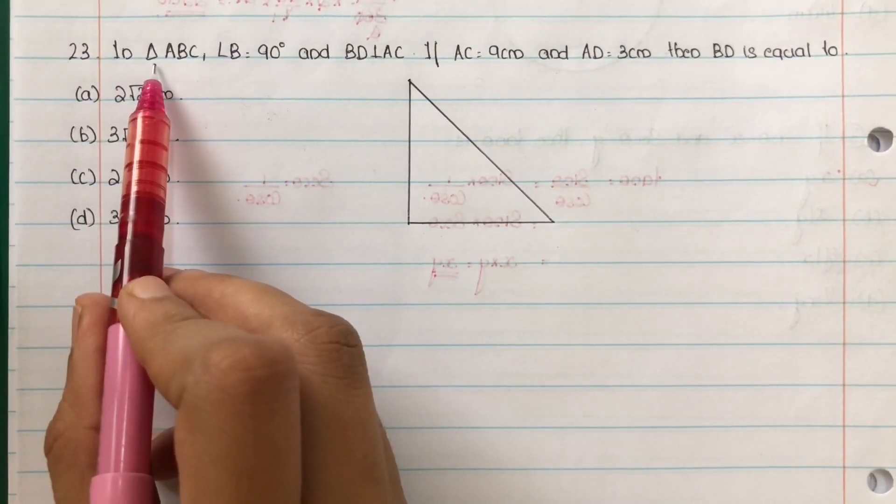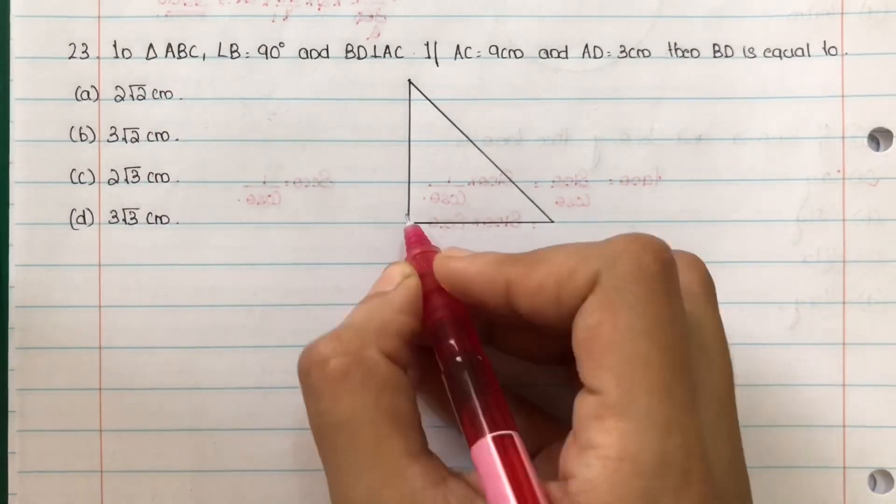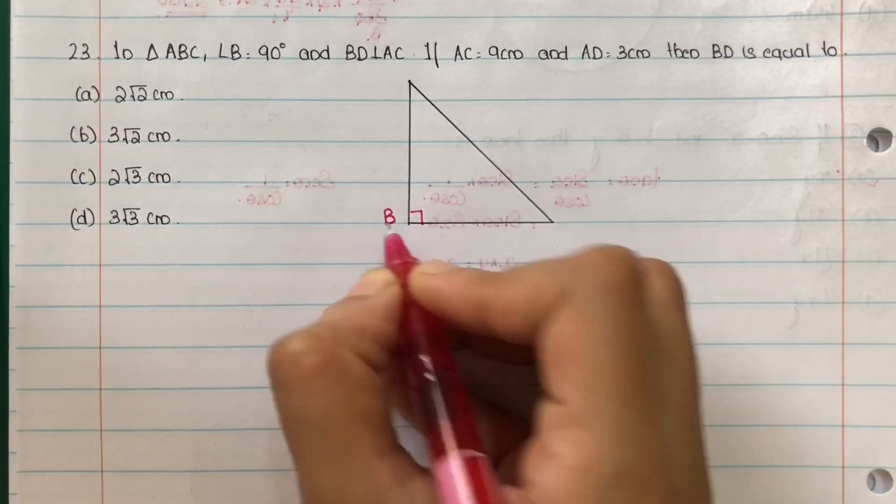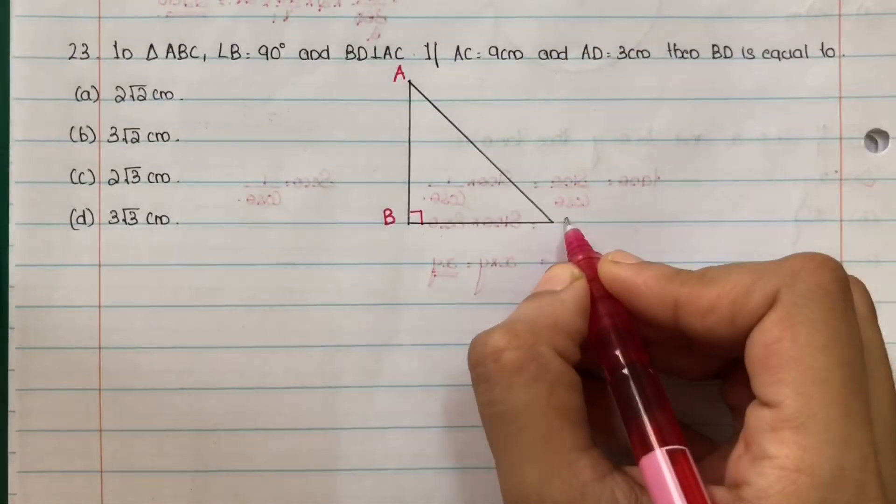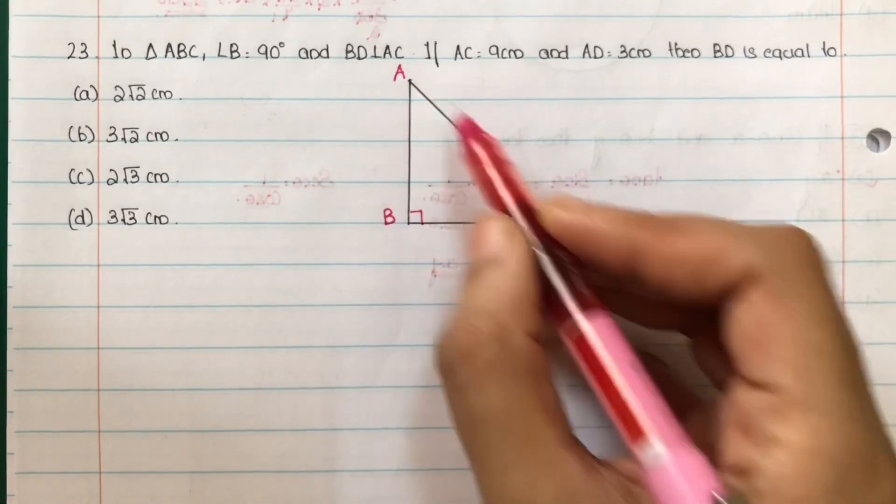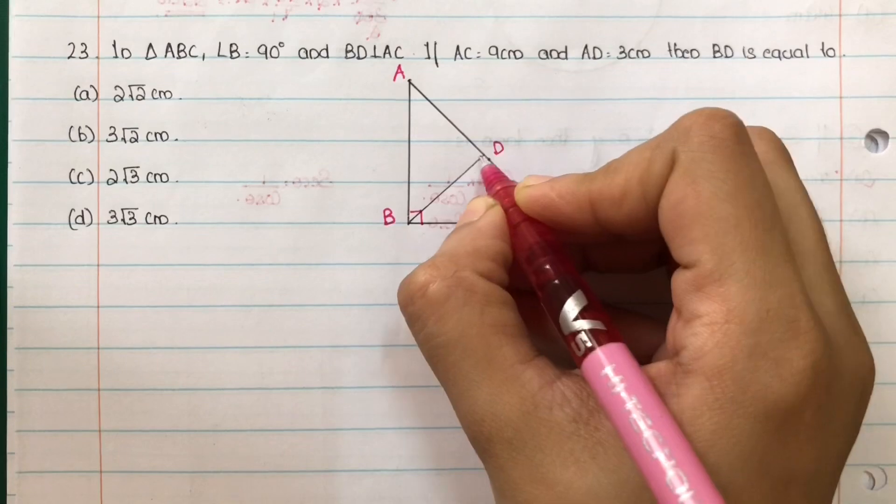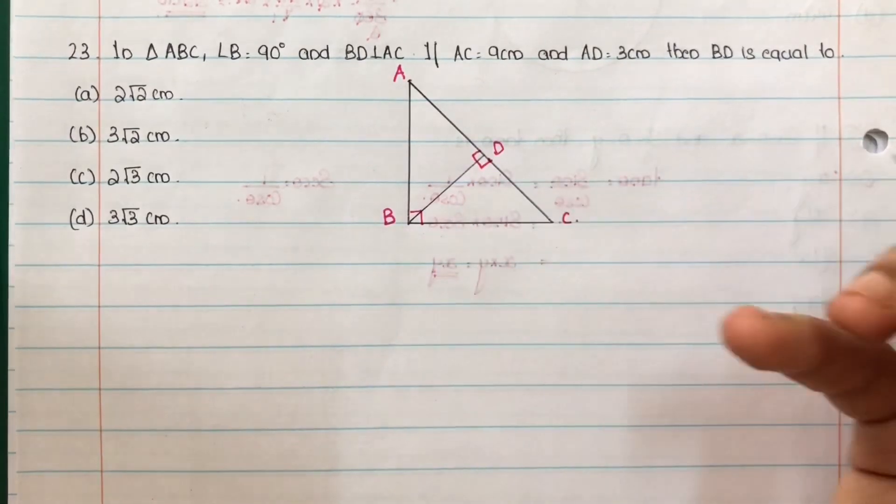Given a triangle ABC, angle B is equal to 90 degrees. And triangle is ABC. BD perpendicular to AC. AC, B in real life, D. BD is perpendicular to AC.